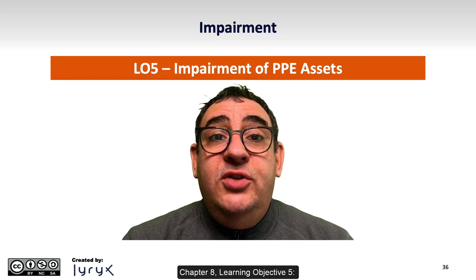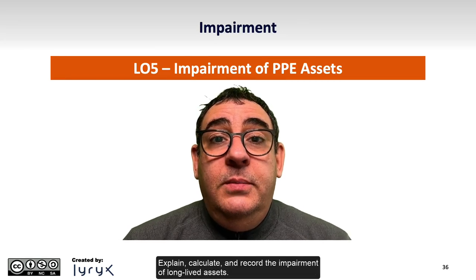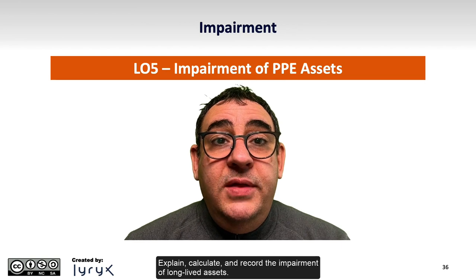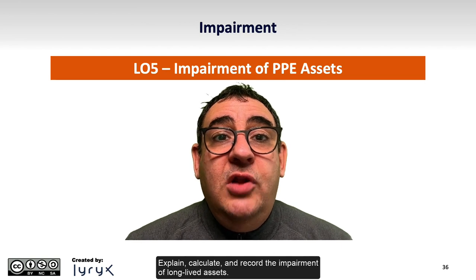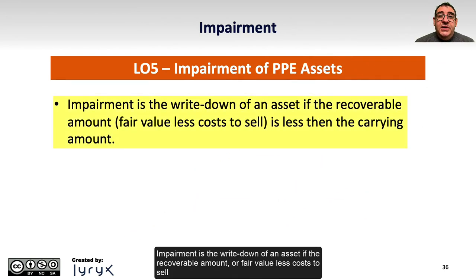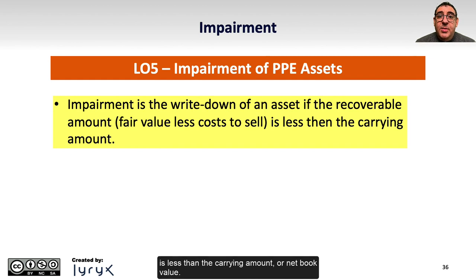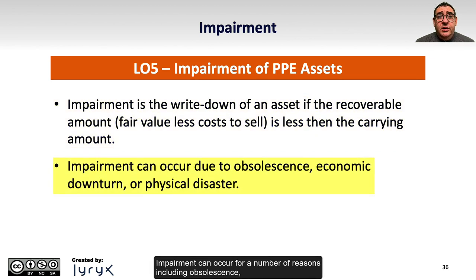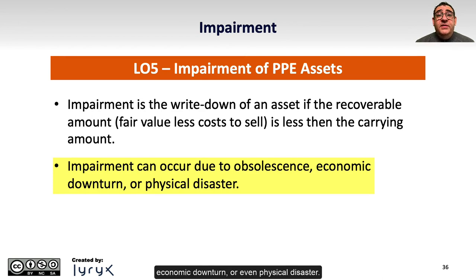Chapter 8 Learning Objective 5: Explain, calculate, and record the impairment of long-lived assets. Impairment is the write-down of an asset if the recoverable amount, or fair value less cost to sell, is less than the carrying amount or net book value. Impairment can occur for a number of reasons including obsolescence, economic downturn, or even physical disaster.